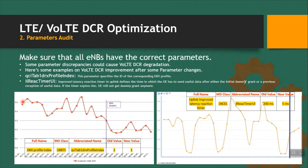VOLTE DCR KPI was near 0.5 and came down to 0.2 after changing the DRX profile index parameter — LNBTS MO class — from 2 to 1, giving good improvement in VOLTE DCR. The second parameter belongs to the LN cell MO class: uplink improved latency reaction timer. We changed it from 200 milliseconds to 5 milliseconds, and found improvement in VOLTE DCR from 1.4 to 1.3. These are two parameters you can try in your network.